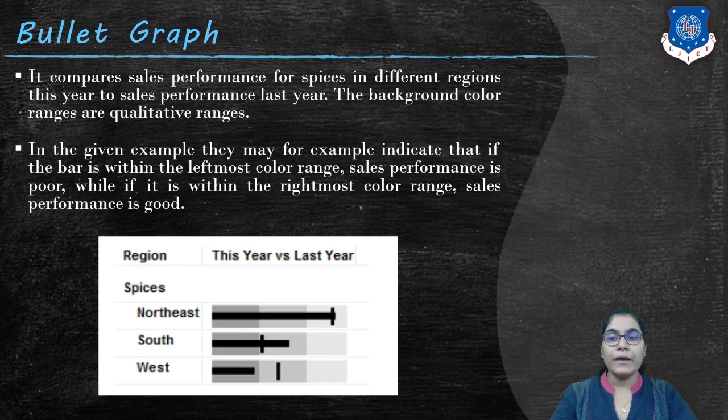It compares sales performance for species in different regions this year to sales performance last year. The background color ranges are qualitative ranges. In the given example, they may, for example, indicate that if the bar is within the leftmost color range, the sales performance is poor.